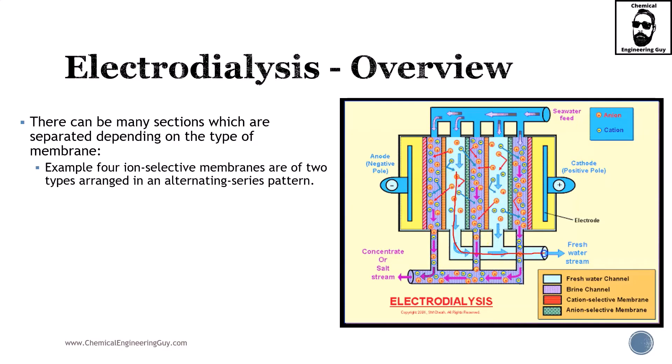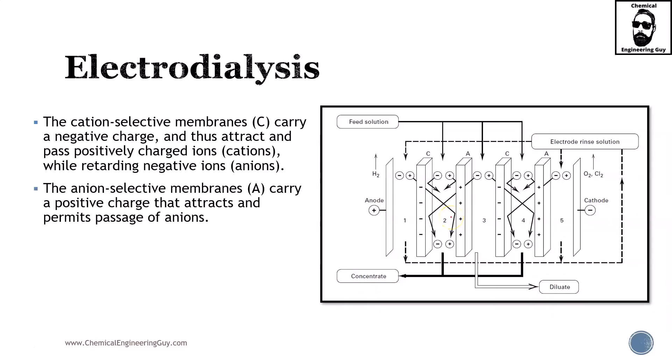We get these streams which are very low in ions, and we get the concentrate which is the reverse. Eventually, the ions—cations and anions—end up in one stream, and that's why we have the concentrate. The cation-selective membranes carry a negative charge and thus attract and pass positively charged ions, which are cations.